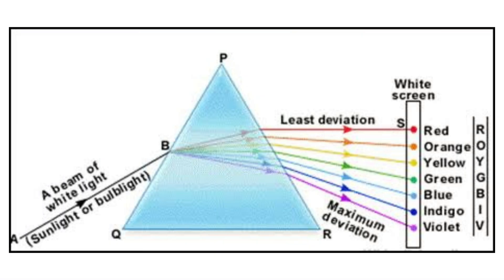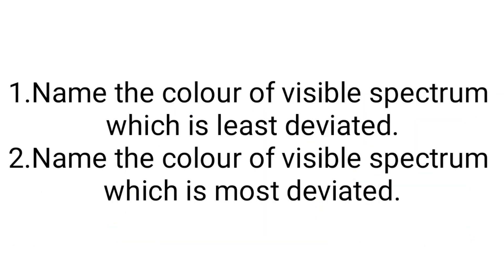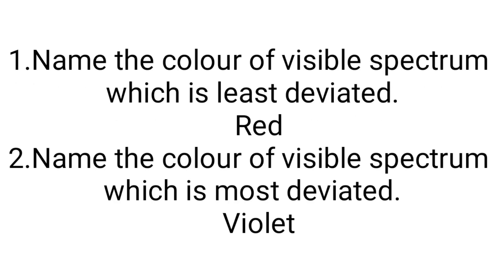A fact that should be 100% clear to your mind is that violet is the color with maximum deviation, while red is the color with least deviation. Popular questions that we come across are: name the color of the visible spectrum which is least deviated, or the color which is most deviated. So be clear that violet has maximum deviation and red has least deviation.